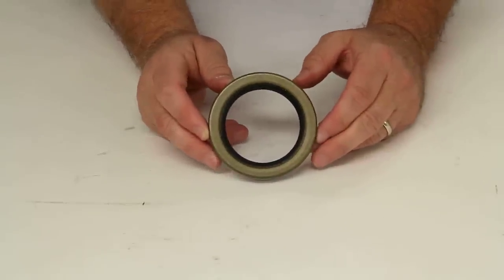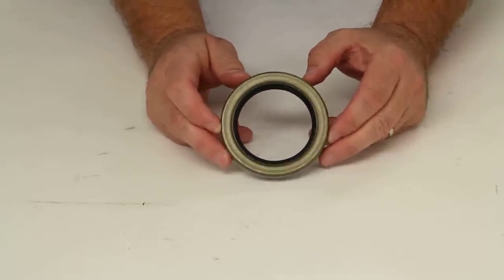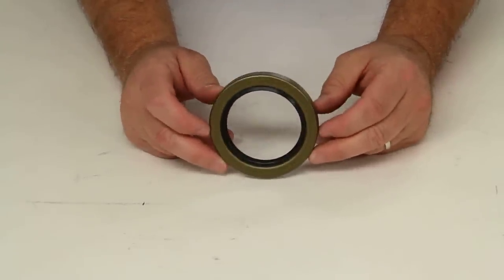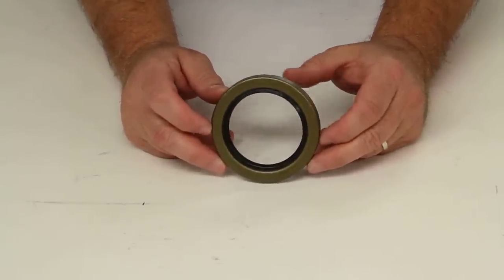This oil seal is designed for the older style 8,000 pound axles, and it is designed to be used with a 60-6 wear sleeve.